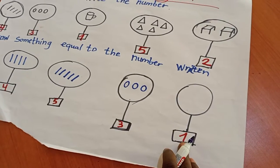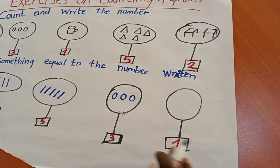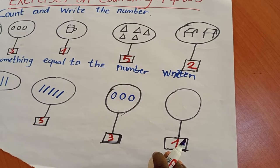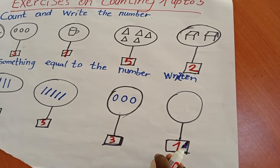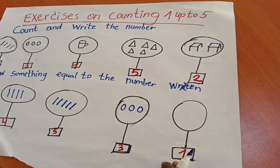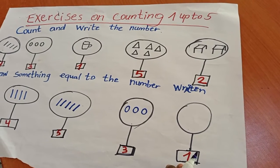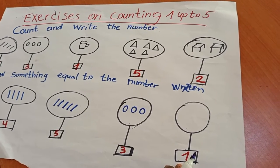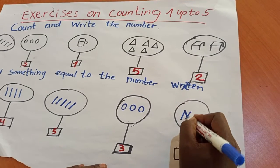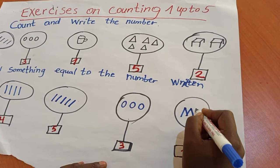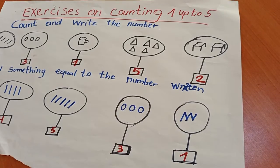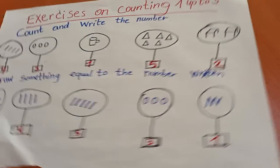Here we have number one. Number one. I'm going to draw something equal to number one. I'm going to draw a block and line. One block and line.